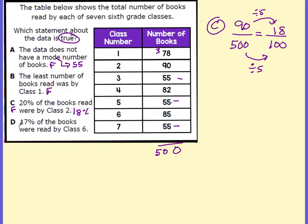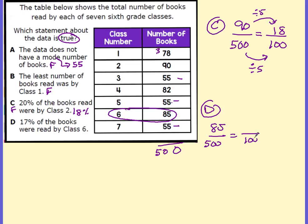That must leave D as the correct answer, but we need to check it. Statement D: 17% of the books were read by class 6. Class 6 read 85 books — 85 out of 500. Dividing by 5 gives 17 out of 100, which equals 17%. That was our true statement — D is correct.